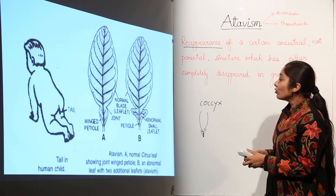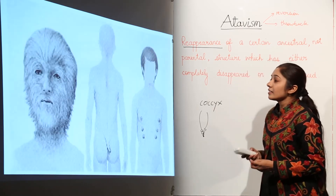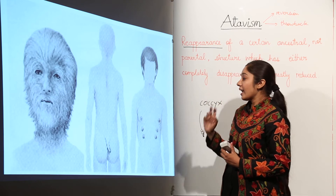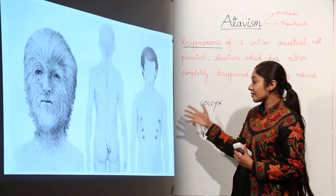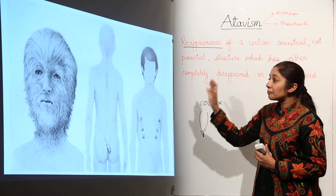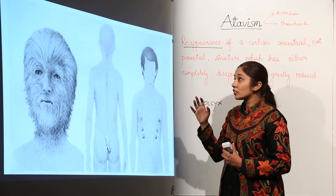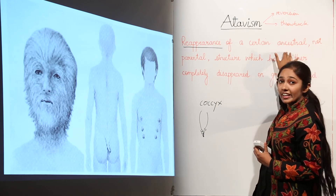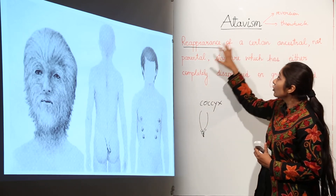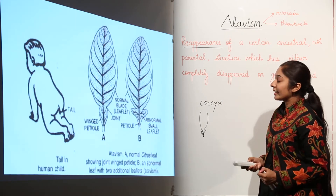Moving to other examples, some human beings have a lot of hair on their body, some have a tailbone, and some have extra mammae — two pairs of extra mammae on their body. This appearance of certain characteristic traits which are actually ancestral traits no longer commonly present is an example of atavism.